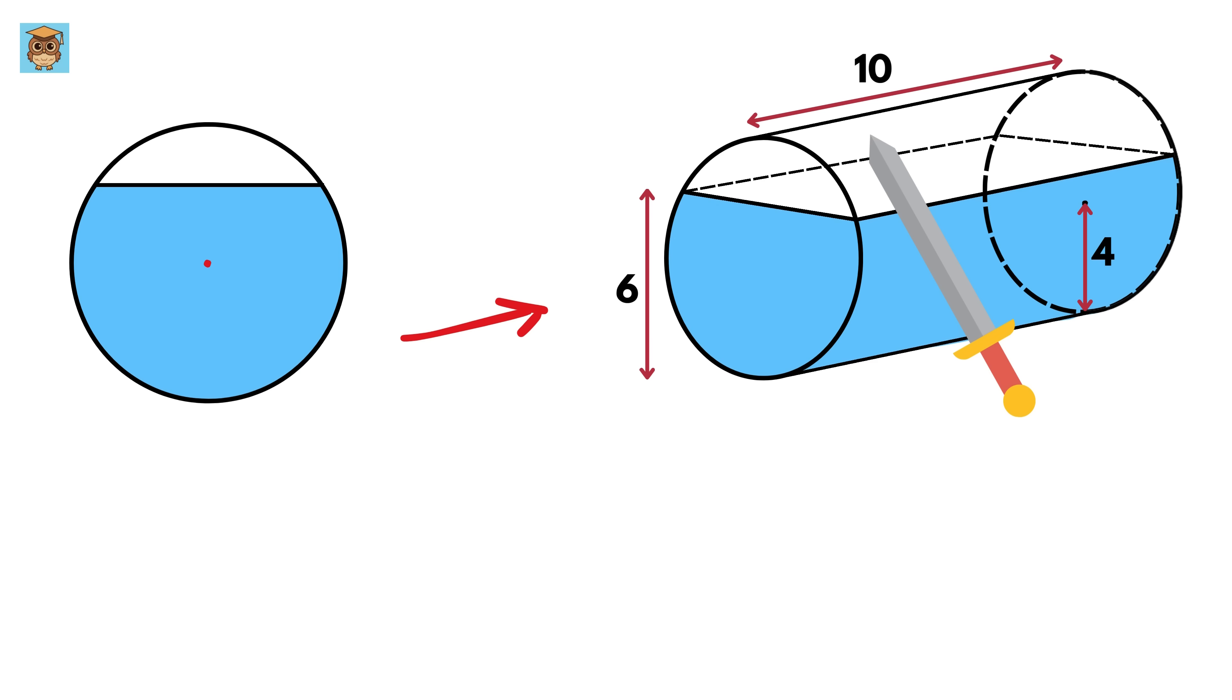So to find the volume of water we need two things: the area of this circular segment, the part of the circle below the water level, and the length of the tank. This is because the volume of the cylinder equals the area of this base times its length. So the volume of water will be 10 times the area of this circular segment which we will call A.